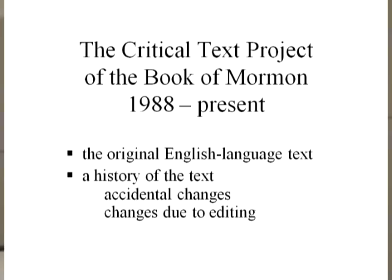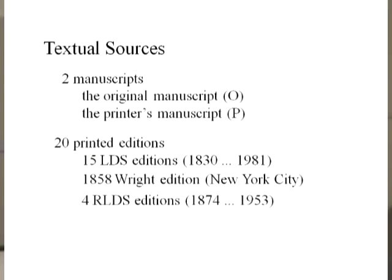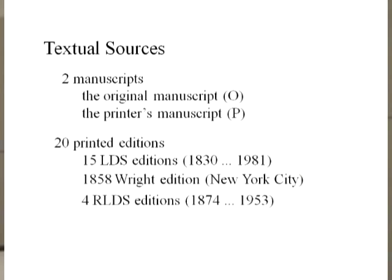When dealing with recovering the original text, there are two manuscripts. The most important is the original manuscript — the dictated manuscript that Joseph Smith dictated to his scribes. Twenty-eight percent of this is extant. The other manuscript is called the printer's manuscript, prepared to take to the 1830 printer to set the type. We have also studied twenty printed editions of the Book of Mormon: fifteen LDS ones, one private one from 1858, and four RLDS ones.